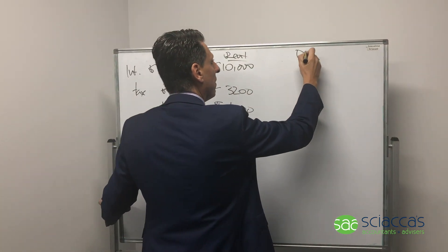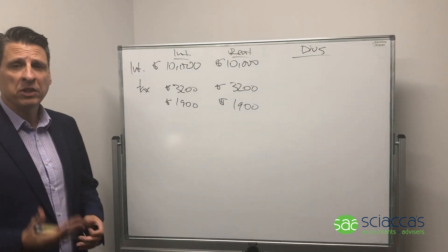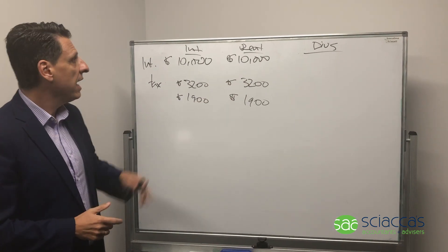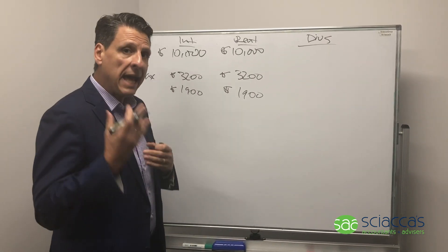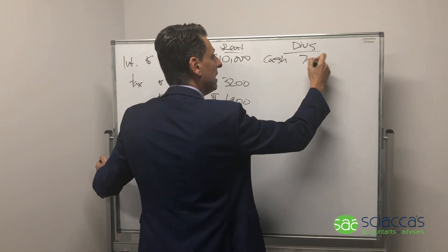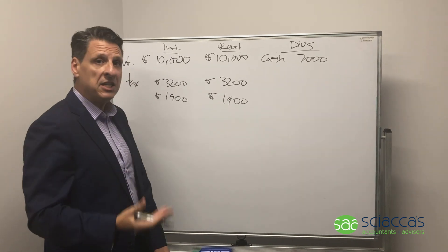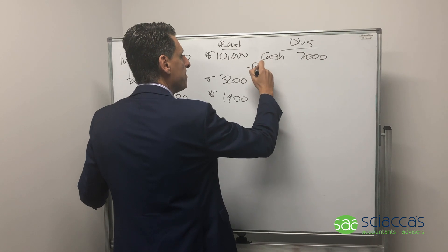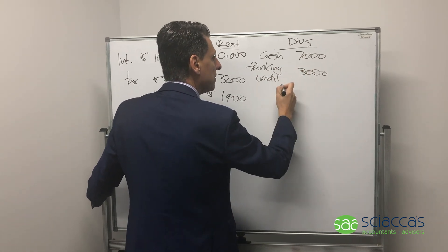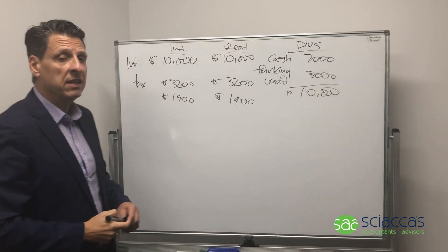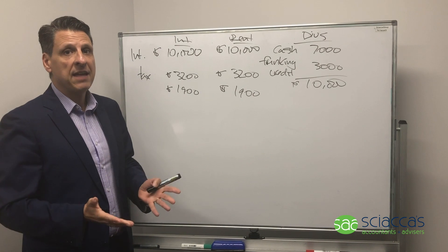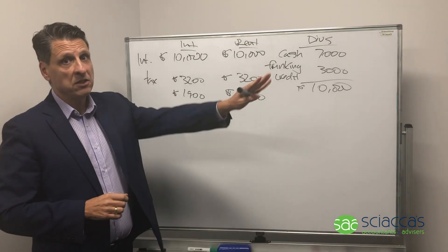When we look at dividends — the return on your investment when you buy shares listed on the stock exchange or where you're a shareholder in a private company — the difference between interest and rent is that your cash return is split. The cash you've received is, say, $7,000, and then you get a tax credit, known in the media as a franking credit, of $3,000. So your total return on investment is $10,000 — you've received $7,000 in your hand and $3,000 has gone to the tax office.